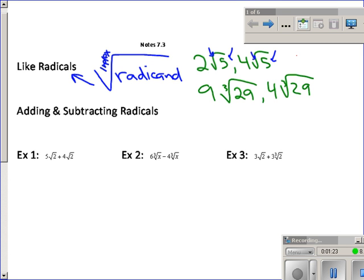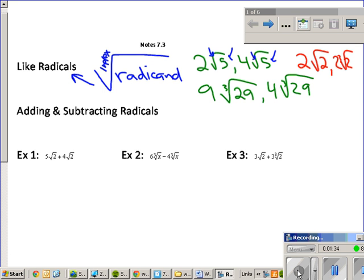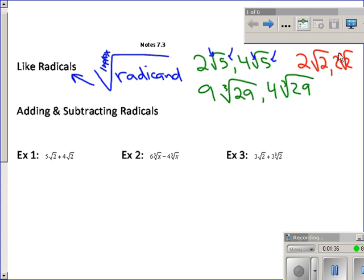I could take something that looks almost similar: 2√2 and 2∛2. Those are not because they don't have the same index. If this one was to the third power, then they are not like radicals. In order to add and subtract like radicals, you must have like radicals, just like needing common denominators.